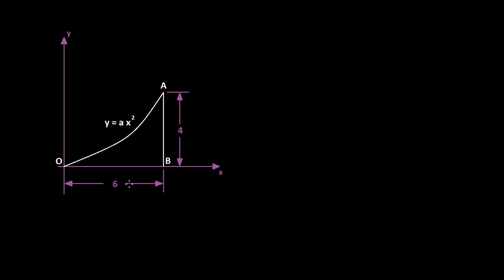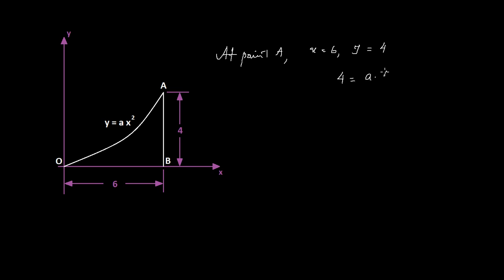You have a maximum X value of 6 and a maximum Y value of 4. In the equation you have a constant A, and you need to find the value of that constant. At point A, X equals 6 and Y equals 4. Substituting those values gives 4 = A × 6², so A = 4/36, which equals 1/9.